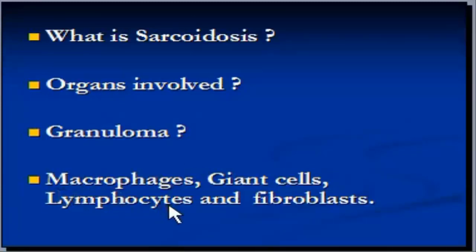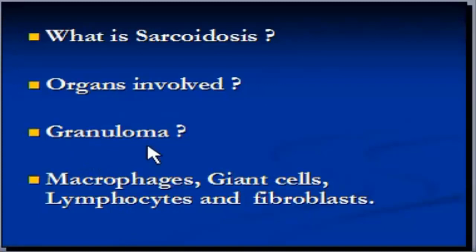There are also lymphocytes, another type of cell, and fibroblasts. A fibroblast is a cell type involved in the healing process. Now that we know what a granuloma is, we can define sarcoidosis as a granulomatous disease in which multiple granulomas are formed within an organ, most usually in the lungs.